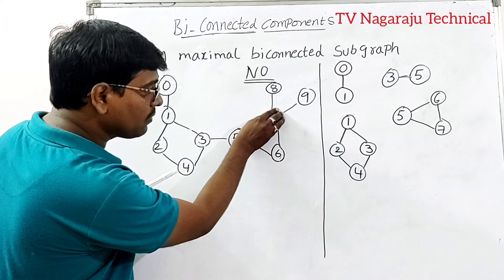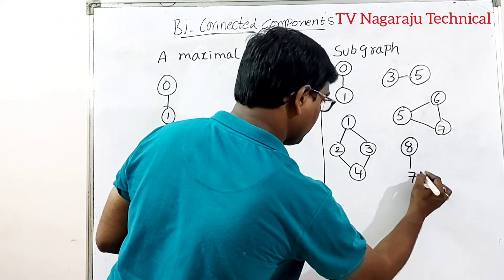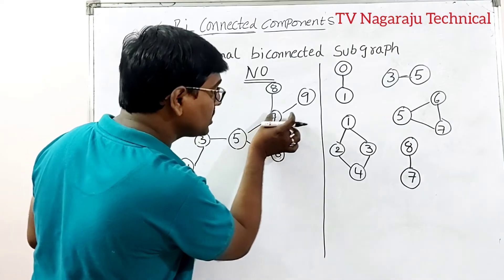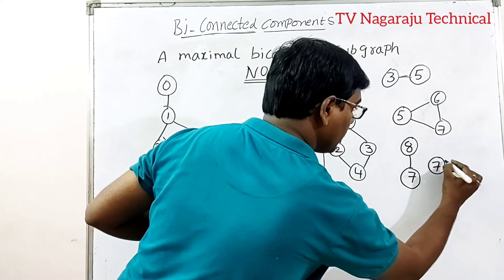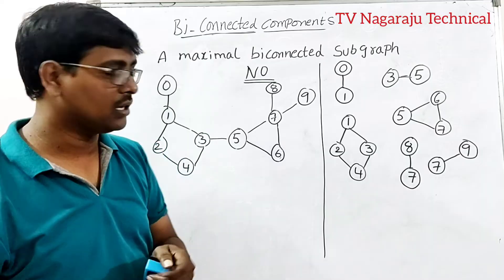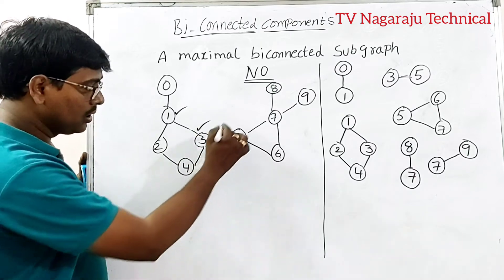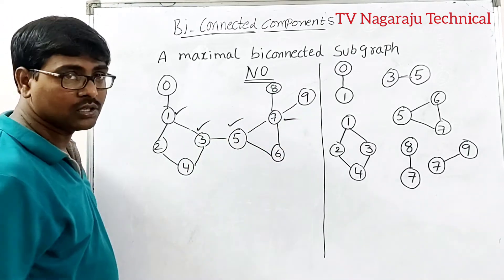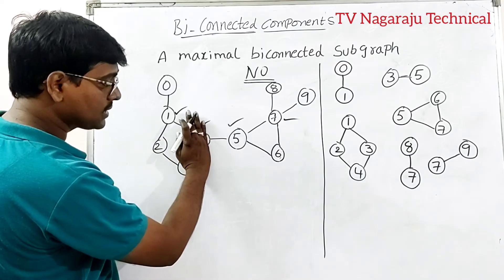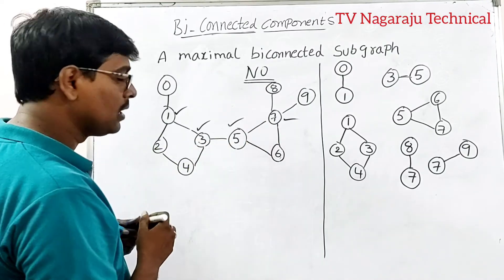Vertex 5 is an articulation point, so three-to-five is one component and seven-six is another component. Removing vertex 7: eight-to-seven is one component, nine is another component, so seven-to-nine is also a component. Summarizing, the articulation points for this example are: 1, 3, 5, and 7. Removal of 6, 9, or 8 causes no disconnection.